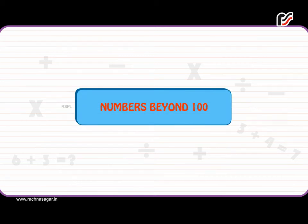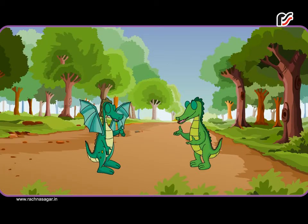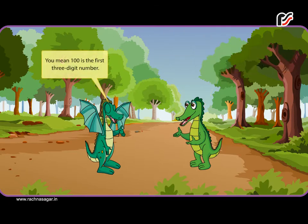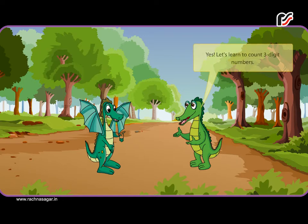Numbers beyond 100. Do you know that 99 is the last two-digit number? And 99 plus 1 is equal to 100. You mean 100 is the first three-digit number? Yes.